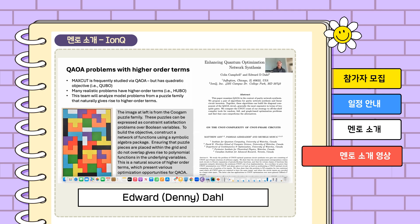If you use QAOA to turn this problem into a quantum circuit, you'll frequently end up with circuits that have very complicated higher order terms, or representations of higher order terms in terms of so-called parity networks. There are a couple of papers on the right side of the slide that we might look at to help us with heuristics for optimizing the circuits that result from this kind of problem.